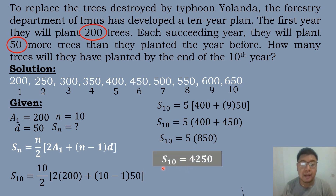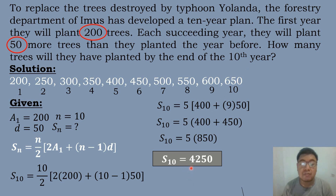The sum of the first 10 terms of the sequence 200, 250, 300, 350 is equal to 4,250. At the end of the 10th year, there are 4,250 total trees planted.